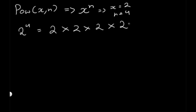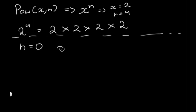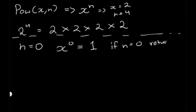Now let's say n is equal to 0. In that case, what the value of x is doesn't actually matter — anything to the power of 0 is always going to be equal to 1. So that's going to be our first condition: if n is equal to 0, we're just going to return 1.